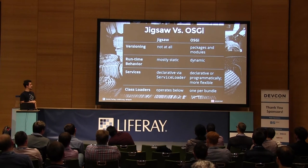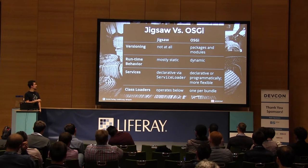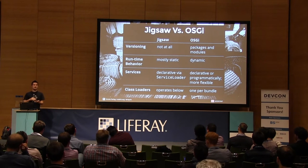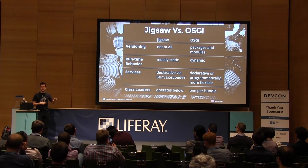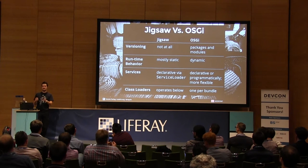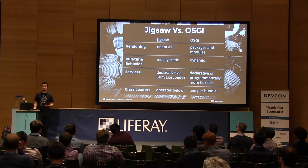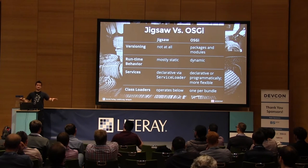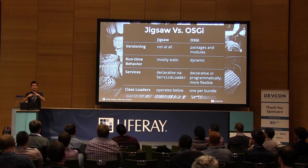Both Jigsaw and OSGi have services and support declarative services, but OSGi is more flexible, also allowing programmatic service declaration. The ServiceLoader in Jigsaw is a good start but not quite there yet. The most important difference is class loaders. Jigsaw operates below class loaders — that was an important decision, and it's a key reason OSGi was not implemented within the JDK. Many systems use class loaders for various things. If Jigsaw enforced a certain class loader hierarchy, a lot of code would break in unpredictable ways. OSGi uses one class loader per bundle because there was no other way to enforce accessibility.